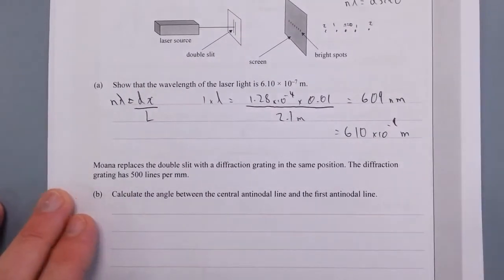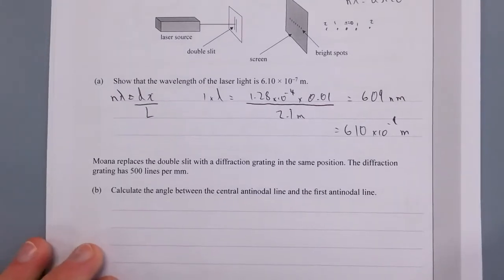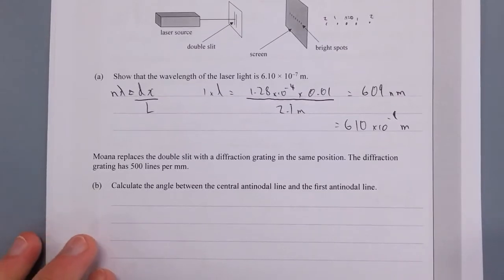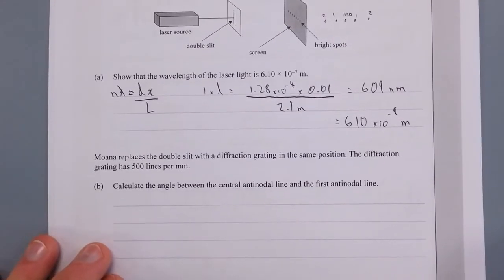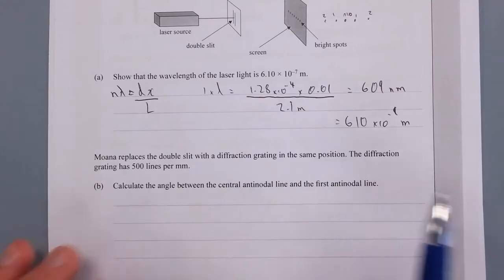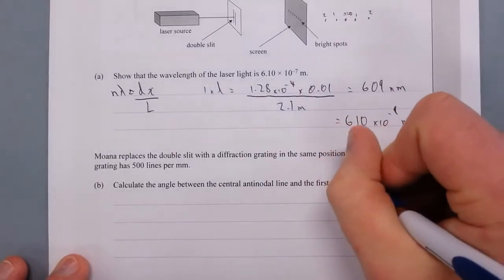Moana replaces the double slit with the diffraction grating in the same position. The diffraction grating has 500 lines per millimeter. Calculate the angle between the central antinodal line and the first antinodal line. So antinodal means the first bright spot. So let's just put that in there: bright.